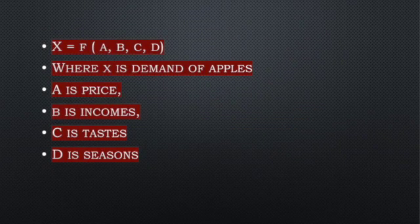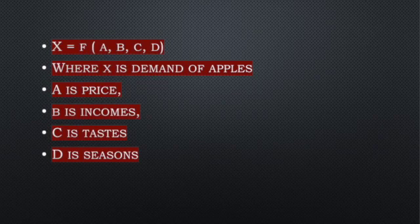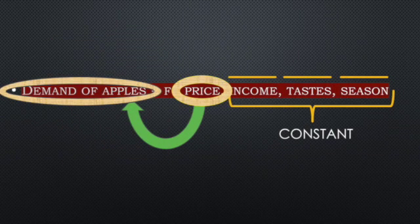Here we have a function that expresses the influence of factors determining demand. For example, the demand of apples is dependent on the price charged for apples, the incomes that people hold, the tastes that they have, as well as the seasons that we are referring to. While we change the price of apples, we keep incomes, tastes, and seasons constant, and then assess the effect that a change in price causes on the apples being demanded.